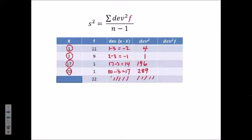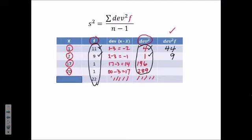The next step requires us to multiply the deviation squared times F. This column and this column. So this gets a little bit confusing. We're going to multiply these two columns together. So 11 times 4, 44. 9 times 1, 9. 1 times 196, 196. And 1 times 289, 289. If we sum this last column, we're going to get 538.